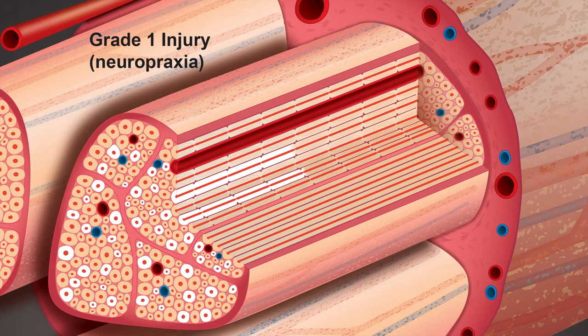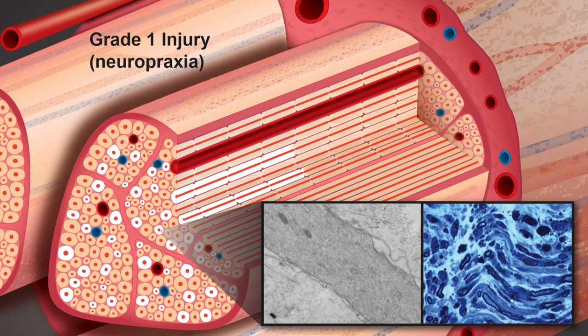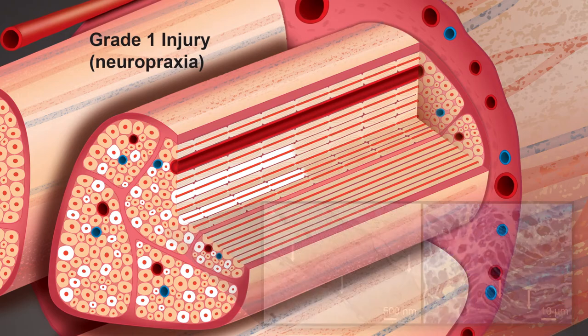Grade one injury is reversible within days to weeks. In this experimental rat model, intrafascicular tibial nerve injection of doxorubicin, a potent broad-spectrum chemotherapeutic, provides axon-segmental demyelination followed by remyelination. Electron microscopy shows a basal lamina scaffolding around a large diameter single axon, denuded of its Schwann cell and myelin sheath on longitudinal section. Magnified image of a longitudinal epon section shows several axons demonstrating segmental demyelination.